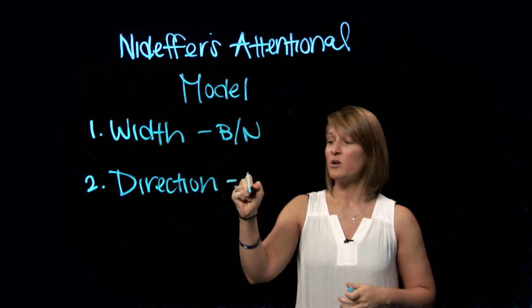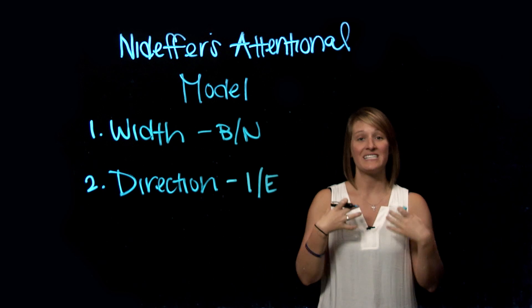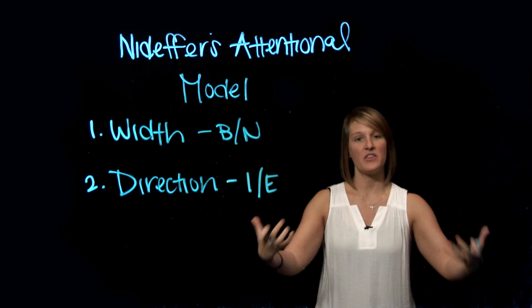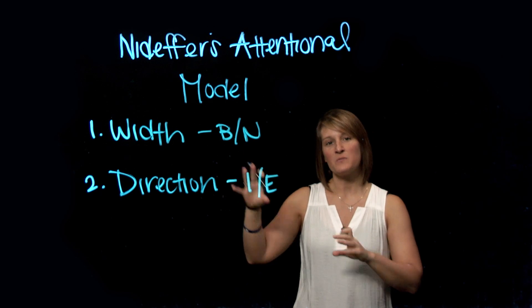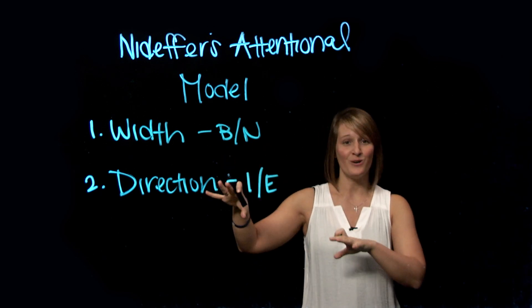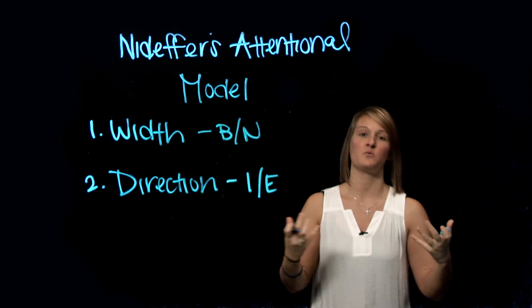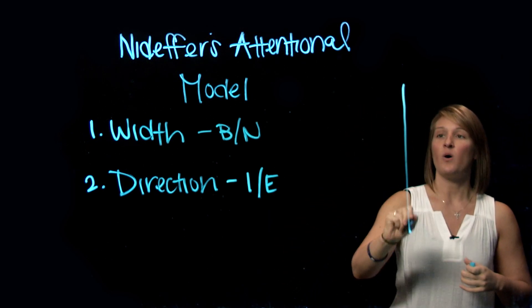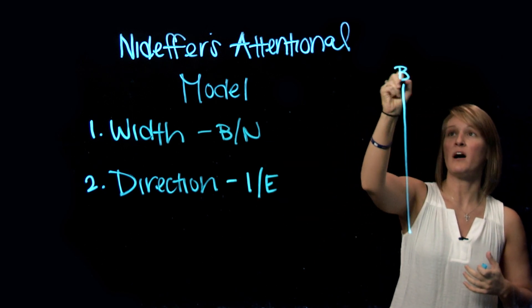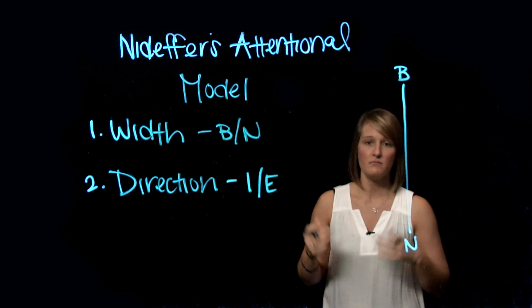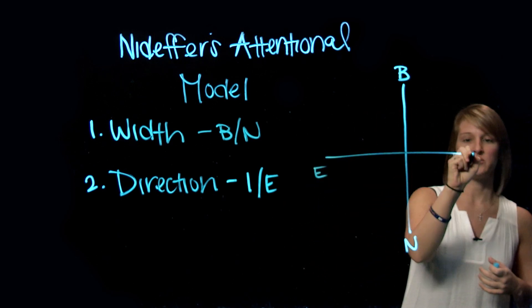When we think about direction, we're going either internal or we're going external. Am I thinking about things inside of myself or am I thinking about things outside of myself? Now, what's really cool about this model is that we combine those two dimensions and create this really cool visual with quadrants. So on this vertical axis, we're going to chart width and we'll put broad at the top and we'll put narrow down at the bottom. And then on the horizontal, we'll put external and we'll put internal.